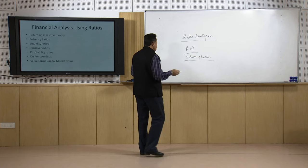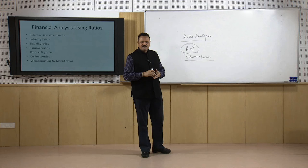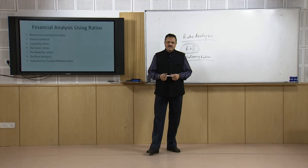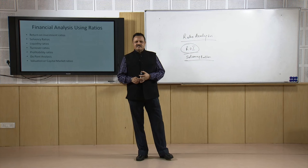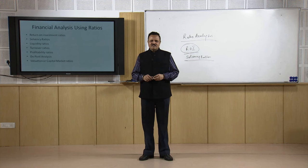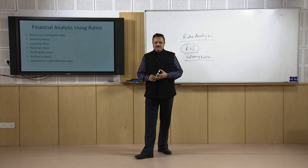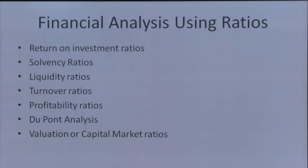Then we talk about profitability ratios. They are related to ROI ratios but profitability is a narrow term. Profitability is where we talk about gross profit, net profit, or some expenses and incomes which increase or decrease the profits. ROI is in a broader sense, but if we want to know the quick profitability of the firm, then we calculate the profitability ratios.